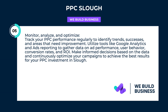Monitor, analyze, and optimize. Track your PPC performance regularly to identify trends, successes, and areas that need improvement. Utilize tools like Google Analytics and ads reporting to gather data on ad performance, user behavior, conversion rates, and ROI. Make informed decisions based on the data and continuously optimize your campaigns to achieve the best results for your PPC investment in Slough.